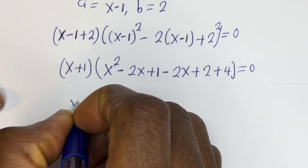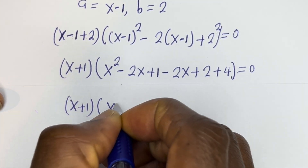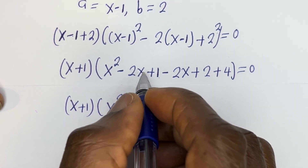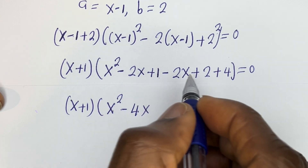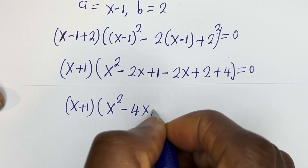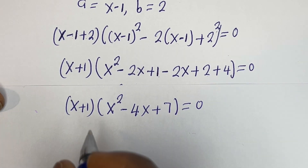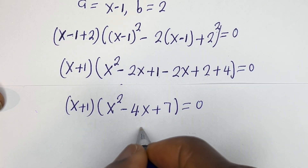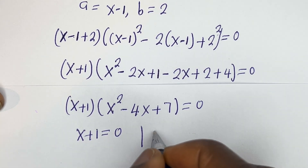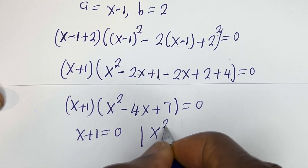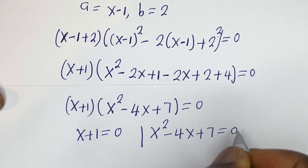From Case 1: (x plus 1)(x squared minus 2x minus 2x plus 1 plus 2 plus 4) equals 0, that is (x plus 1)(x squared minus 4x plus 7) equals 0. There are two sub-cases: x plus 1 equals 0, and x squared minus 4x plus 7 equals 0.